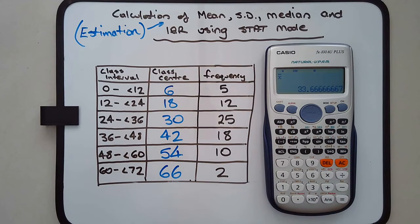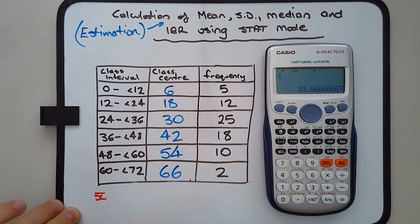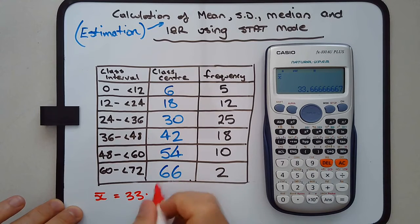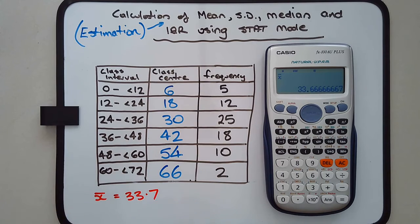We get 30 point something - let's round it to one decimal place. I'll write the answer here. X bar equals 33.67, or just 33.7 to one decimal place.